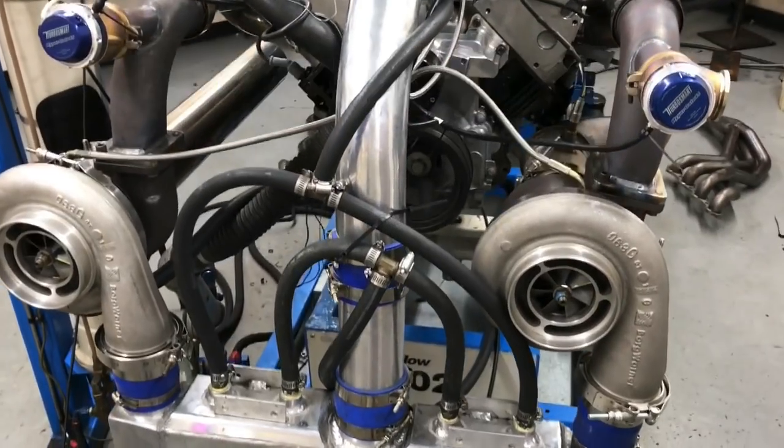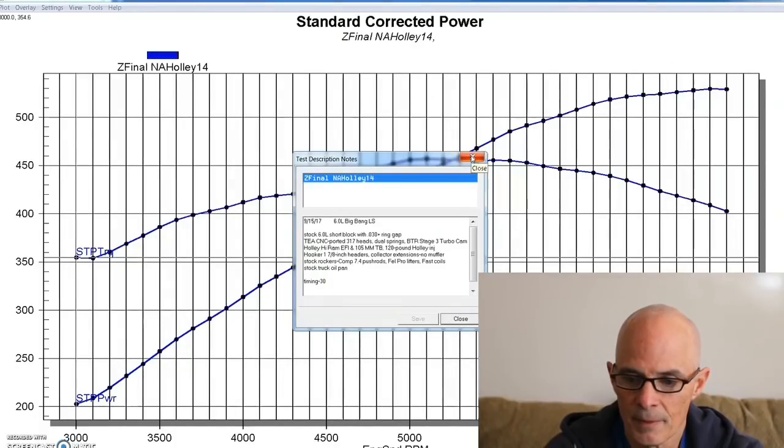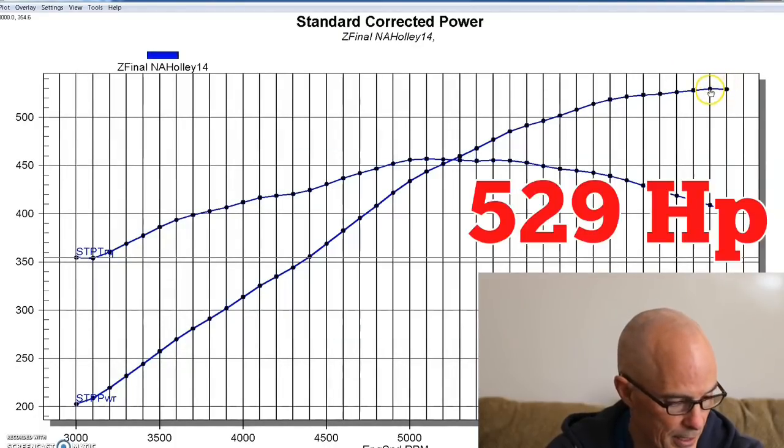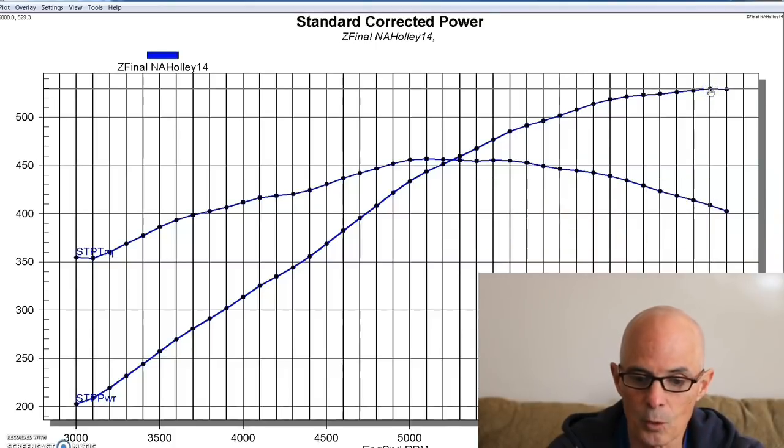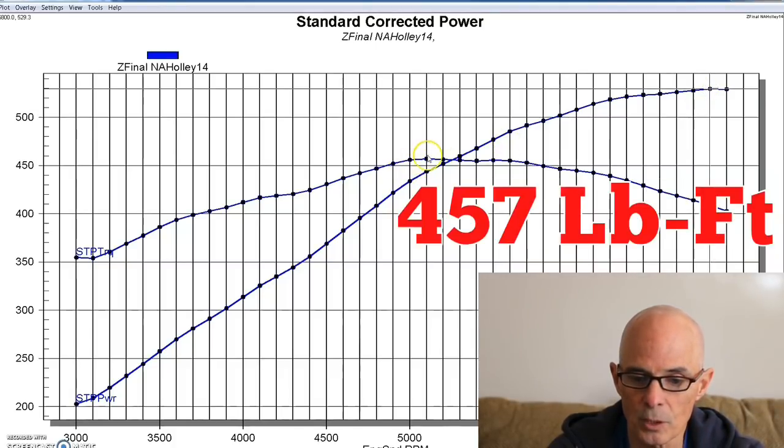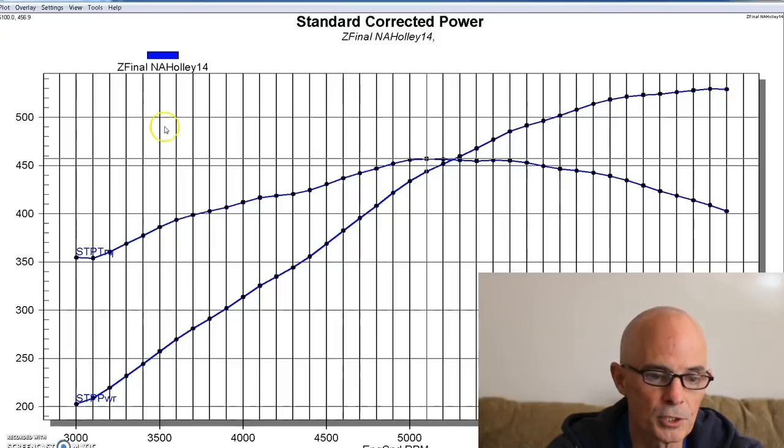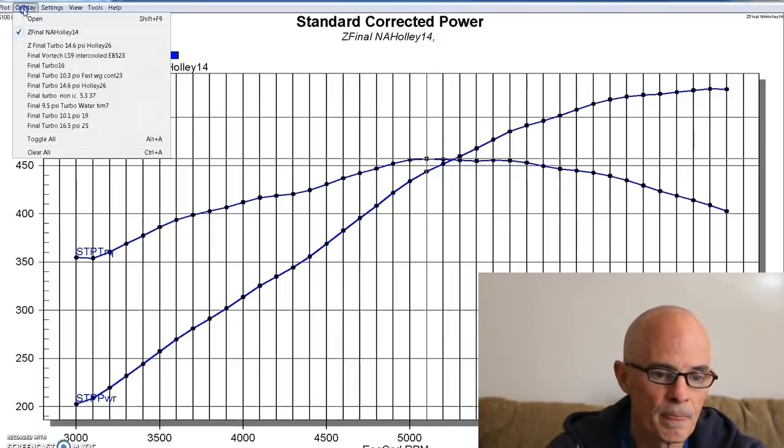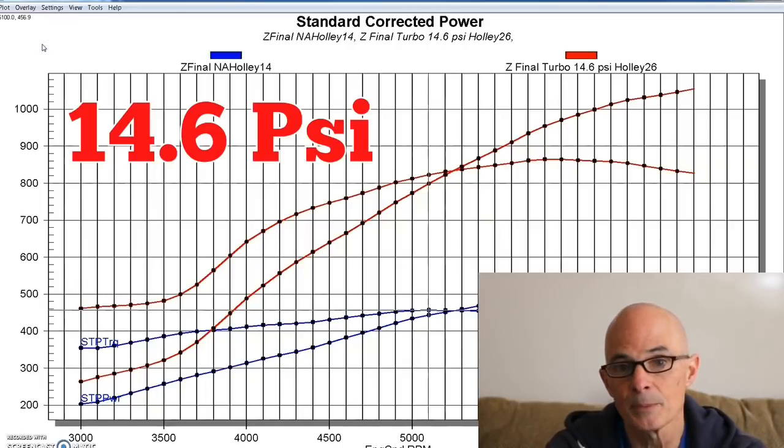Stock bottom end with just ring gap on the 6 liter. And it produced 529 horsepower and 457 foot-pounds of torque run NA, which we always do before we add boost.